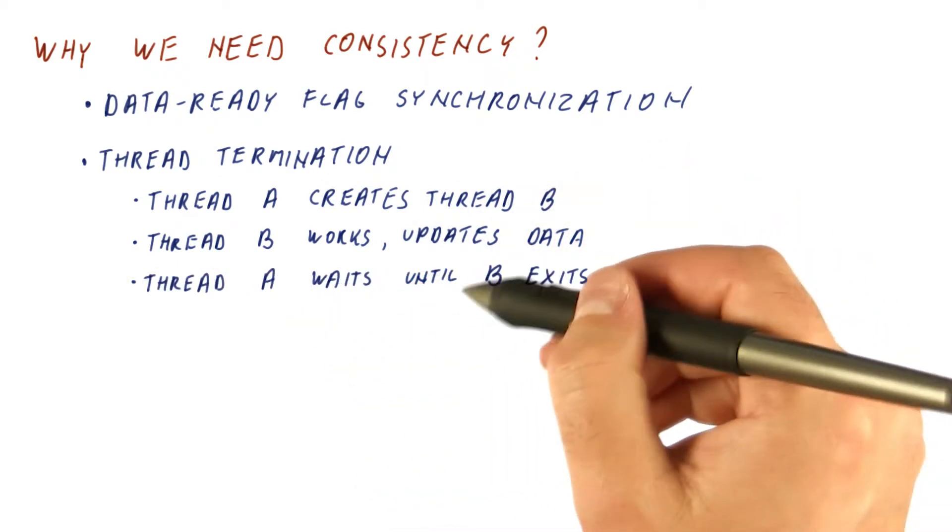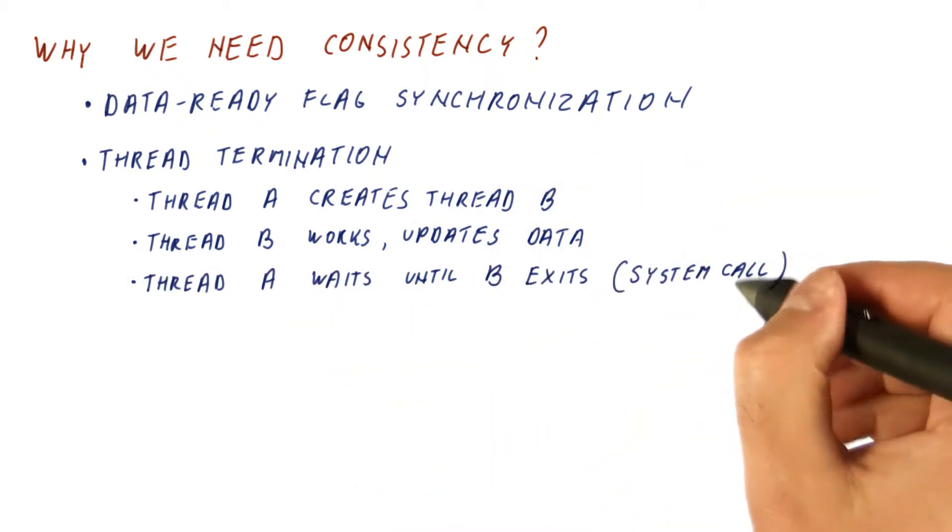while thread A goes and waits until B exits. This happens by doing a system call in thread A, and then the system will wait for B to mark that it's done.